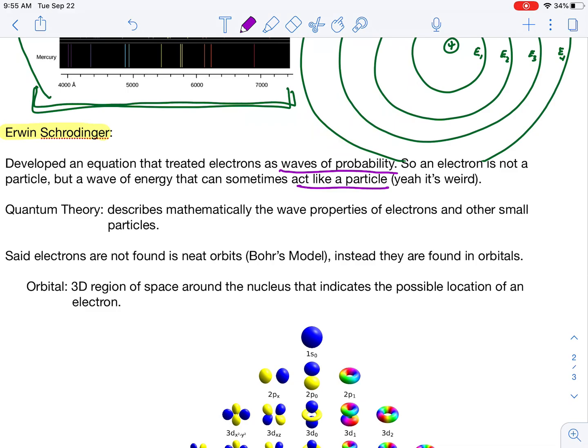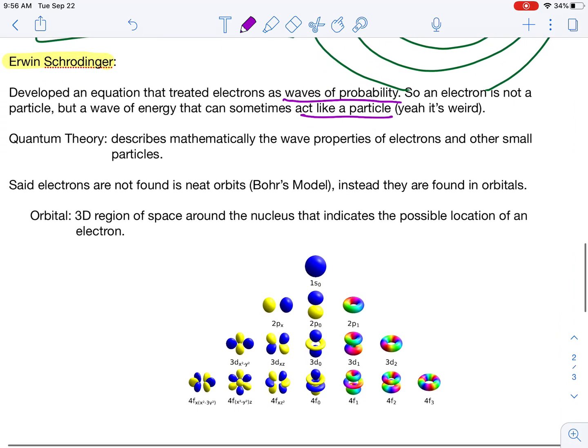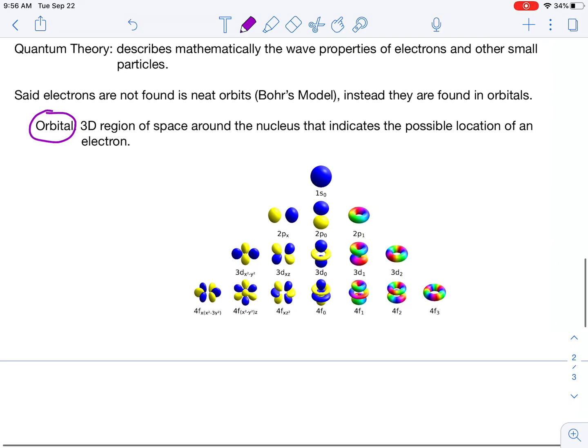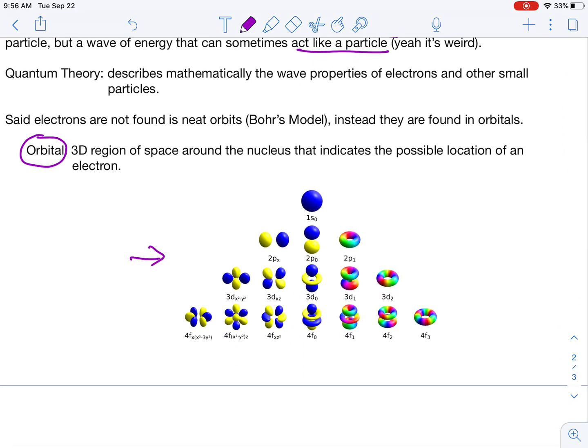So his wave equation described mathematically the wave properties of electrons and other small particles. He said that these things are very weird. They don't just travel in little orbits like this, but they actually travel in orbitals, a 3D region of space about the nucleus that indicates the possible location for an electron. It doesn't even have to stay there. It's just a possible location. And these wave equations that he came up with is really what governs our understanding of the atom. So the electrons aren't just hanging out in neat little orbits like Bohr thought. They're actually in these orbitals like Schrödinger thought.